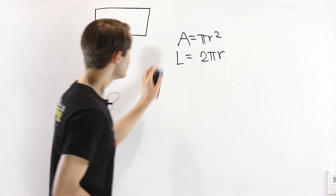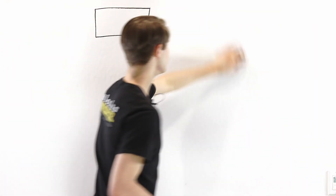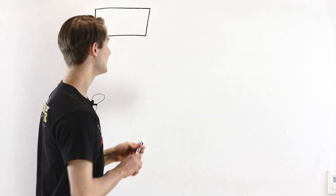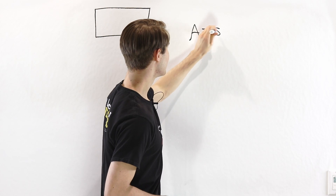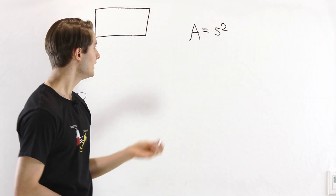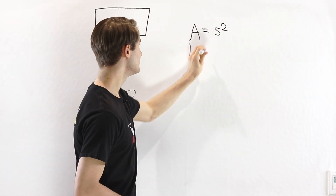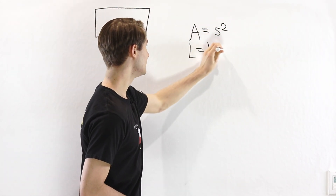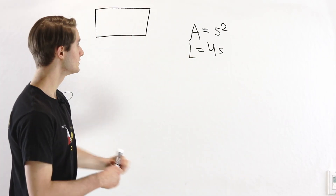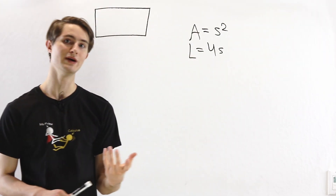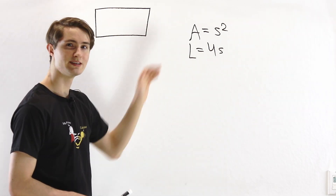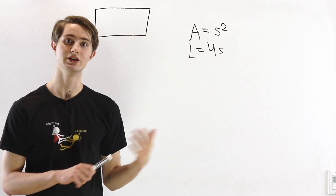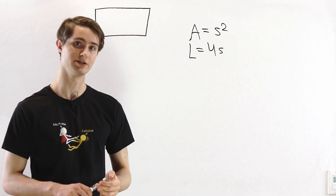But it doesn't seem like this is true for most shapes. For example, if we look at a square, the area of the square is given by the side length squared, and the perimeter is given by 4 times the side length. But the derivative of s squared is 2s, not 4s. So it doesn't seem like the derivative of area is perimeter every time.